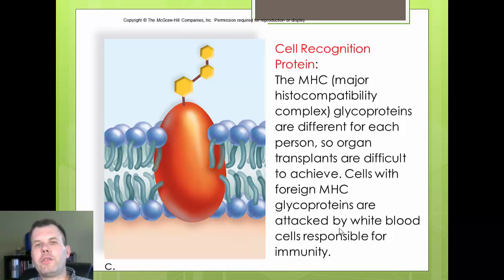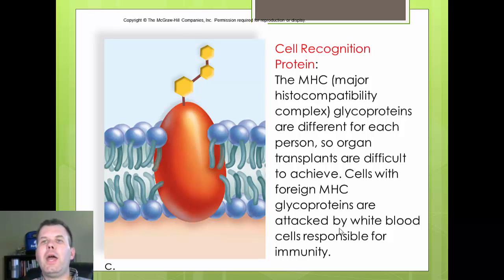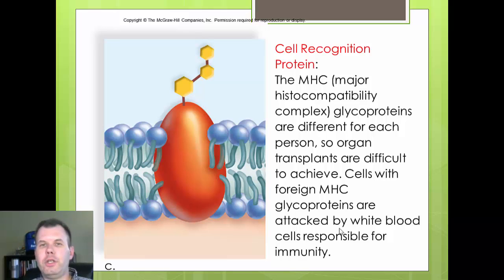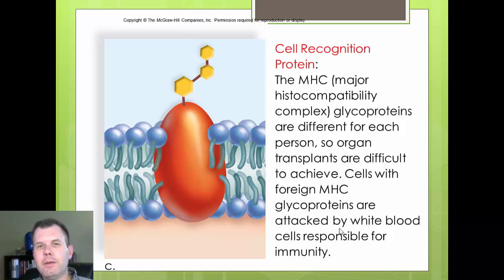The cell recognition protein - also called an MHC, or in the hospital setting an HLA (human leukocyte antigen) - allows cells to be recognized. It tells your body that yes, this is you. This is important for transplants because we have to match these proteins with the person receiving the organ, otherwise the body recognizes it as foreign and destroys it - what we call tissue rejection. These proteins tell your immune system not to kill yourself.